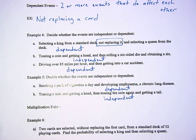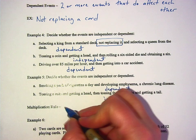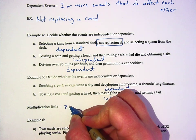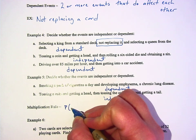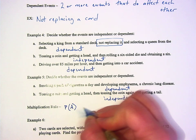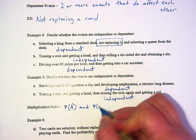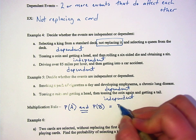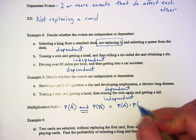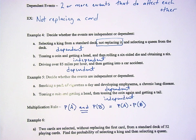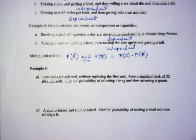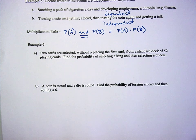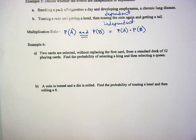The multiplication rule is the probability of A and the probability of B happening. It's the same thing as the probability of A times the probability of B. So if I say, what's the chances of this happening, and then what's the chances of this happening, you just multiply the probabilities together and you'll know what's the probability of both of them happening.